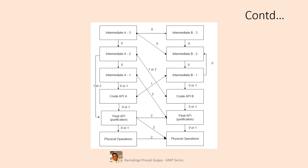Let us understand this flowchart. On the left side are A3, A2, A1, crude API A, pure API A, and physical operations like drying, milling, sifting, etc. A similar list exists on the right side for product B. When equipment is cleaned from A3 to A2, gross cleaning may be adequate - this is Level 0 strategy. From A2 to A1, the same strategy is adopted. From A1 to the crude API stage, the recommendation is Level 0 or 1, because we are reaching the critical step where the API basic molecule is formed as crude API, so more careful cleaning is required.